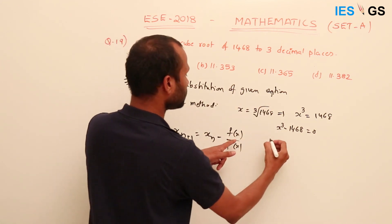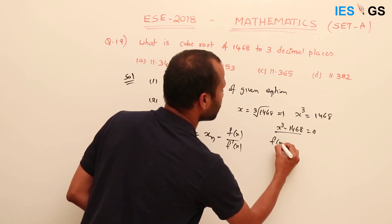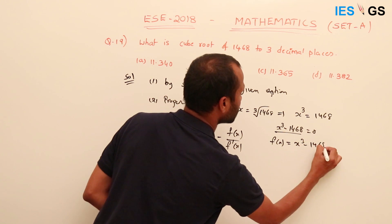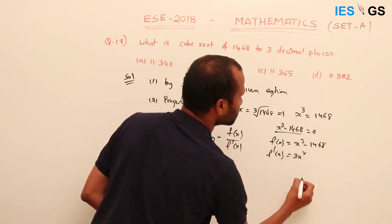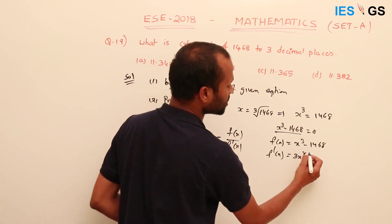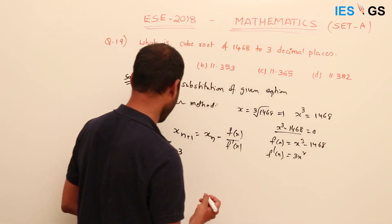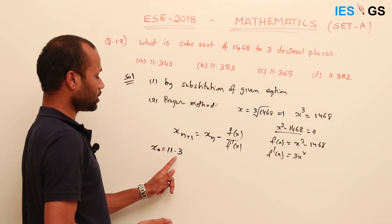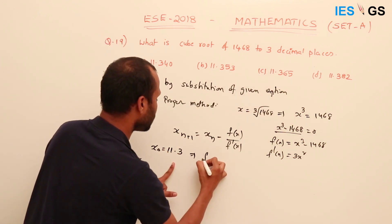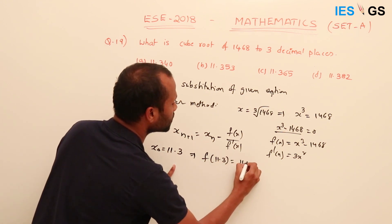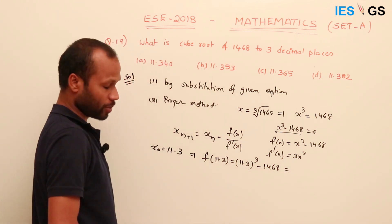Here f(x) = x³ − 146823, and f'(x) = 3x² (since the derivative of x^n is n·x^(n−1), so the derivative of x³ is 3x², and the constant term is 0). Now with x₀ = 11.3, we compute f(11.3) = (11.3)³ − 146823.